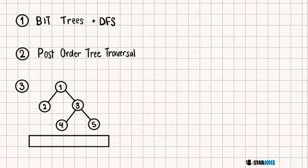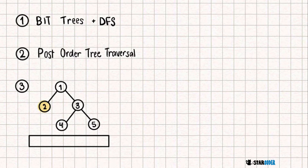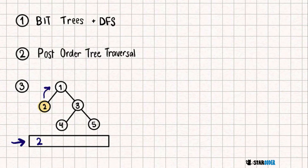We're going to use a post-order tree traversal. Starting at node 1, we go down to node 2, and once we reach node 2 we're going to put it in the BIT tree. The data structure is here and I'm just going to write down all of the numbers currently in it. We then go back up and back down to the next node.